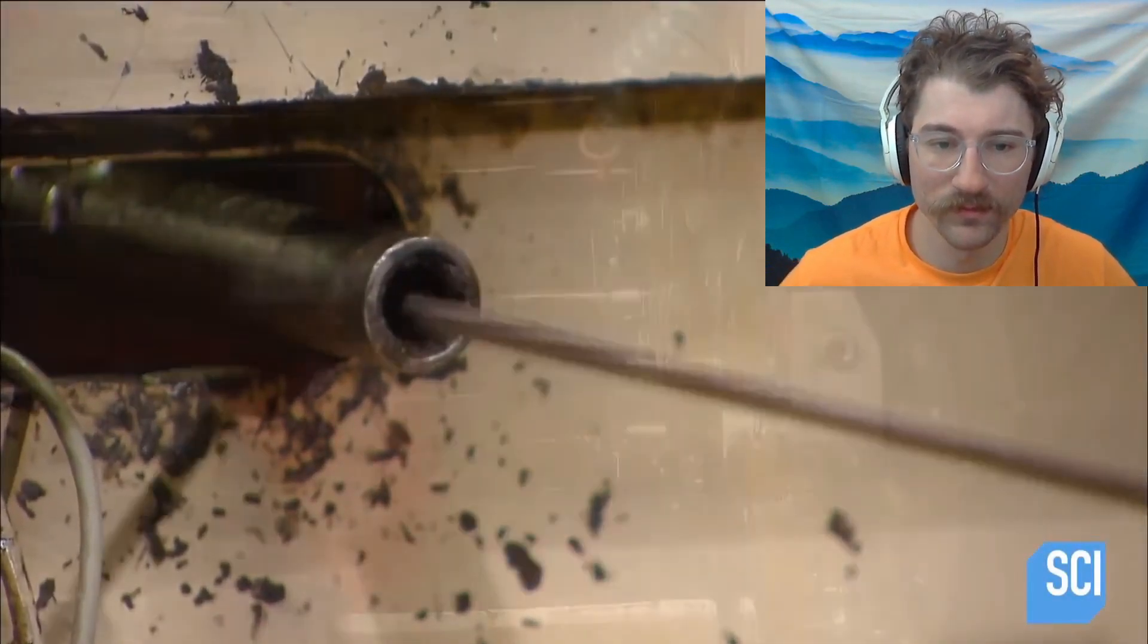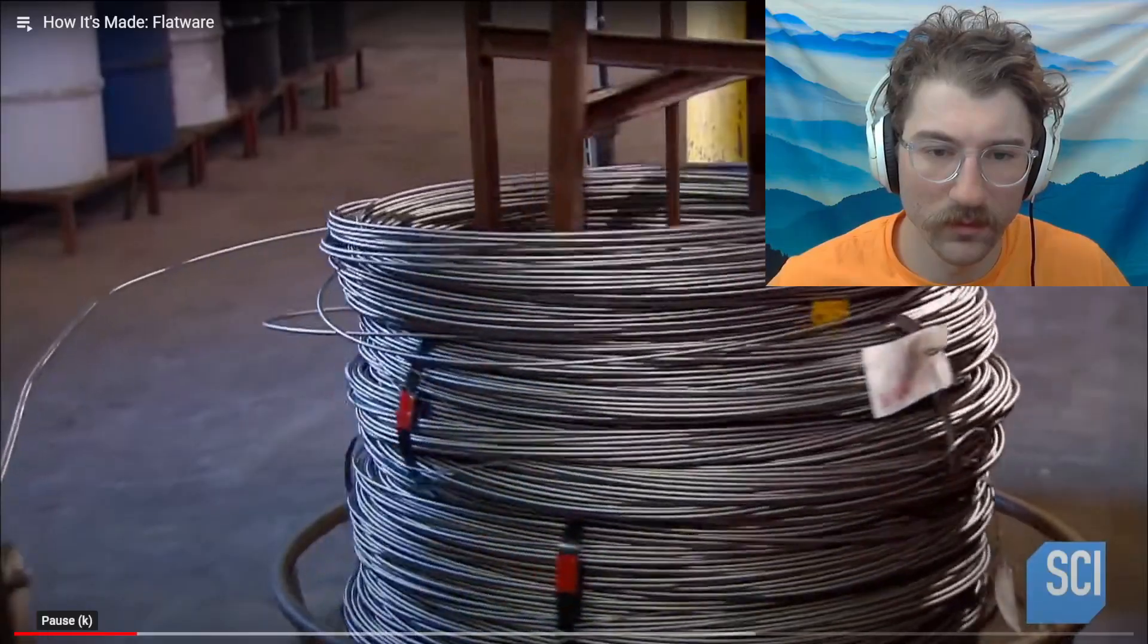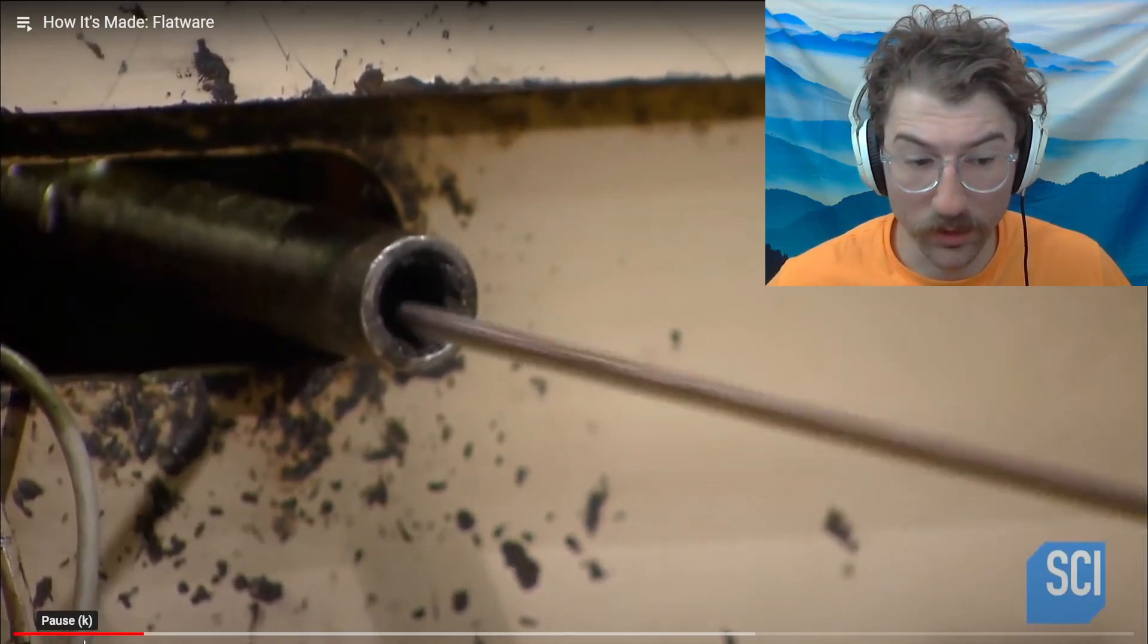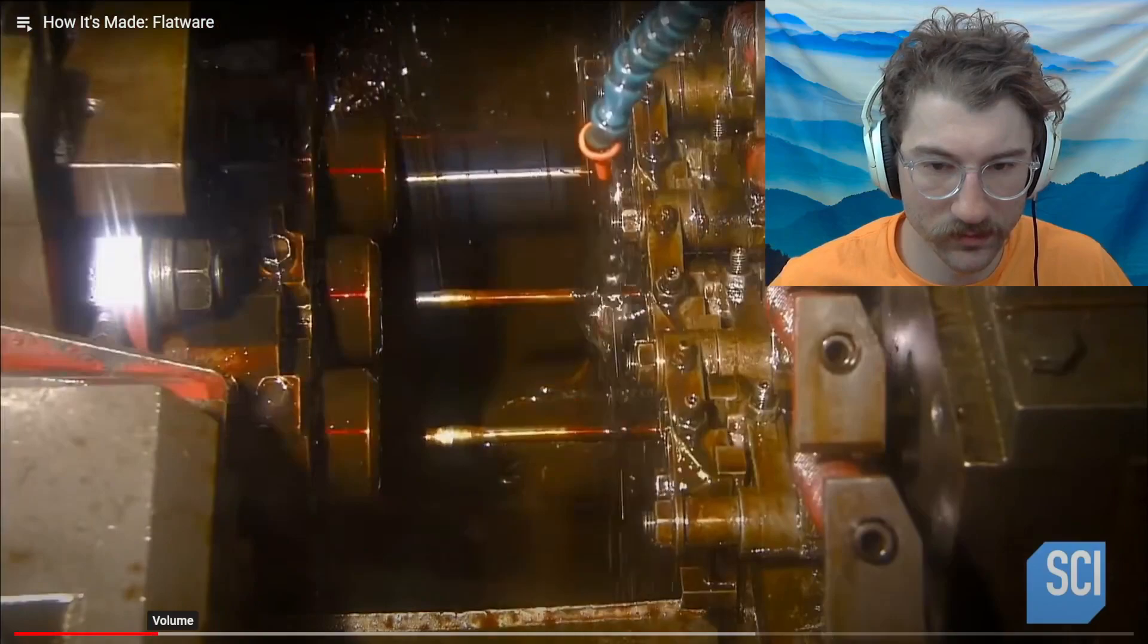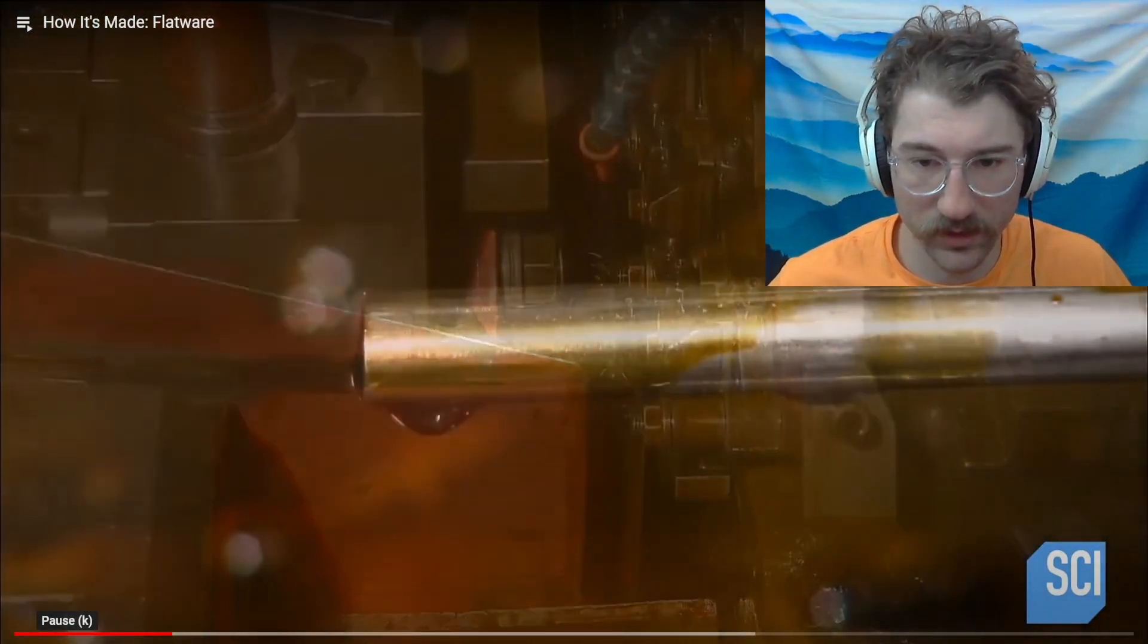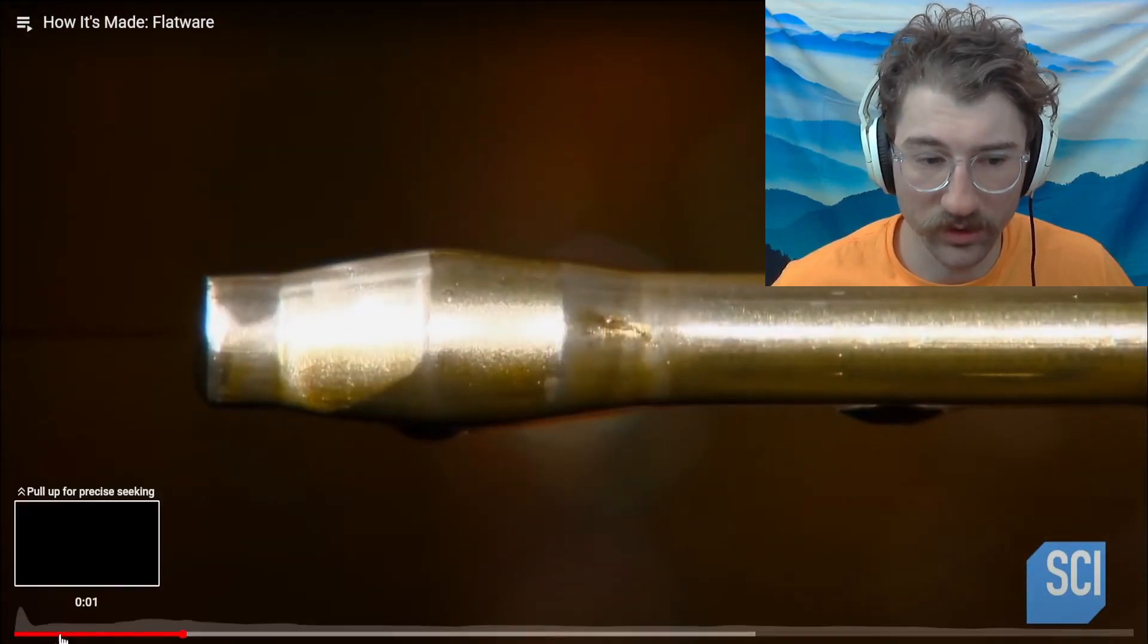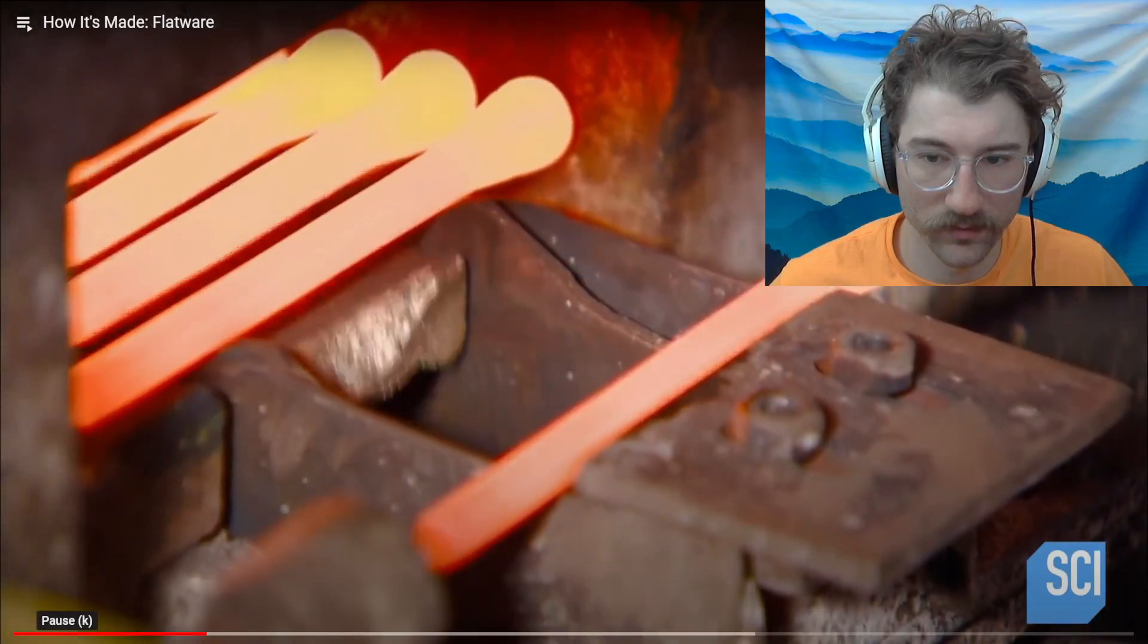To make knives, a heading machine cuts the coil into blank pieces with a head at one end, assuming it's stainless steel with a little bit of nickel and chromium. The knife handle softens the metal so it can be shaped in a forging press.